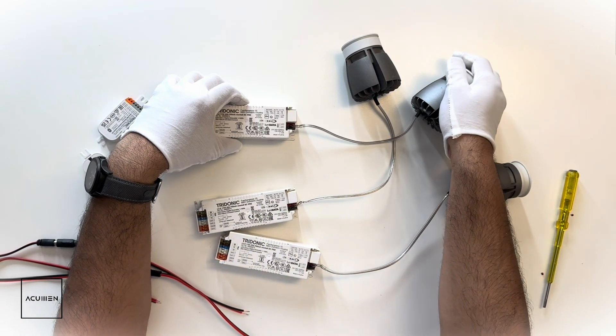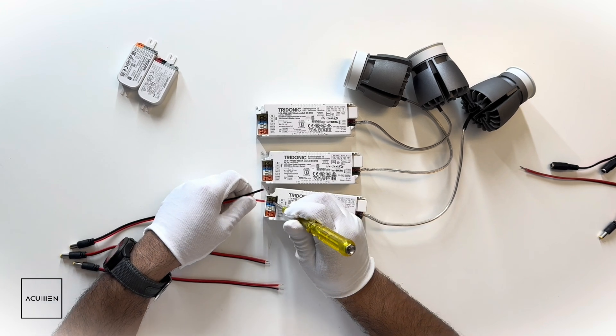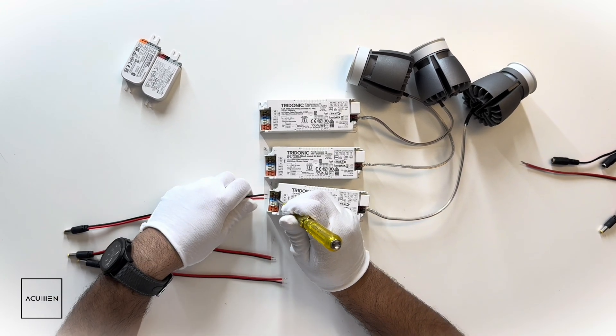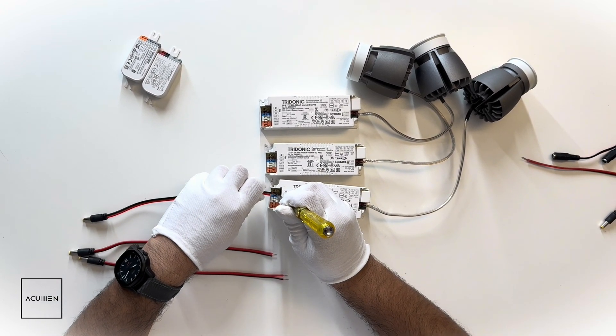Now we will connect the supply wires, which is phase and neutral, in the brown and blue for each light.